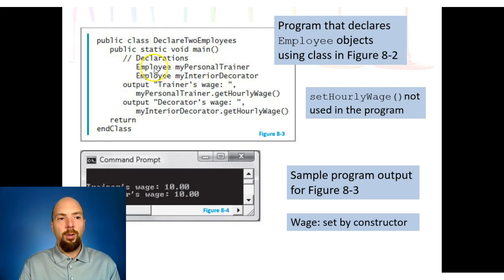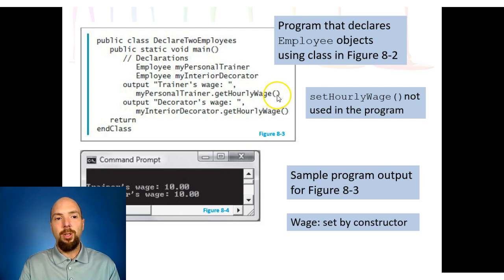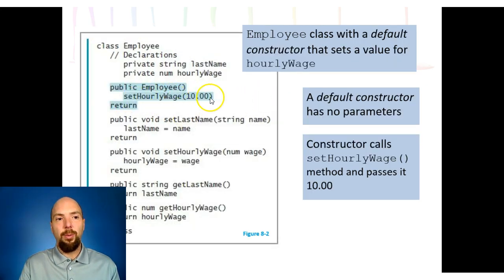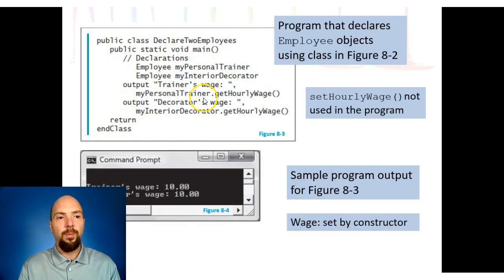In Raptor, we set My Personal Trainer equal to new employee. In pseudocode, we just write the class type, a space, then the name. We then output the trainer's wage using My Personal Trainer dot GetHourlyWage. We didn't set anything explicitly, but because we set the hourly wage to $10 in the constructor, both My Personal Trainer and My Interior Decorator come up with $10.00 an hour when we call GetHourlyWage.